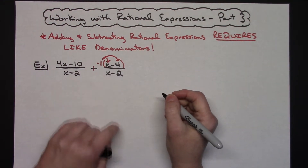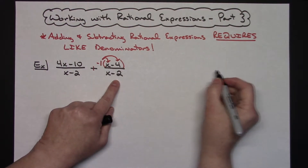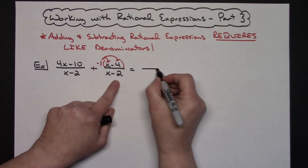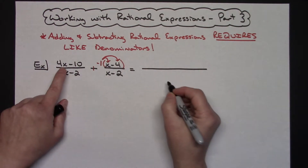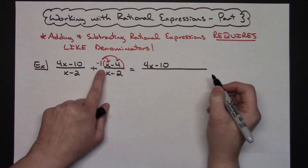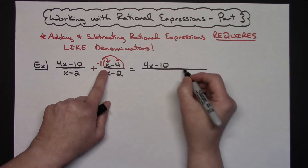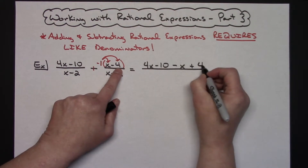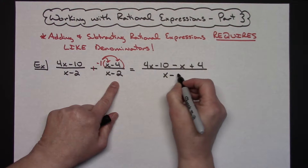Since I've already got common denominators, I will have one fraction with a denominator of x minus 2. Now what I'm going to do for the numerator is take everything and add it. I'm going to have the 4x minus 10, and then because I am subtracting I'm going to switch all the signs — that becomes a minus x and then a plus 4 — all over x minus 2.